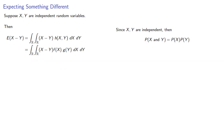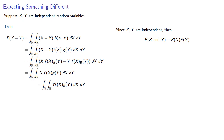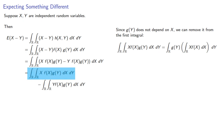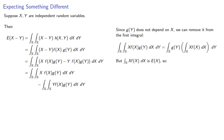We can expand our product, and remember the integral of a sum or difference is the sum or difference of the integrals, so we can evaluate two different integrals. Now consider this first integral. Since g(y) does not depend on x, we can remove it from the first integral. The inner integral over all real numbers of x·f(x) dx is just the expectation of X, so the integral becomes E[X].